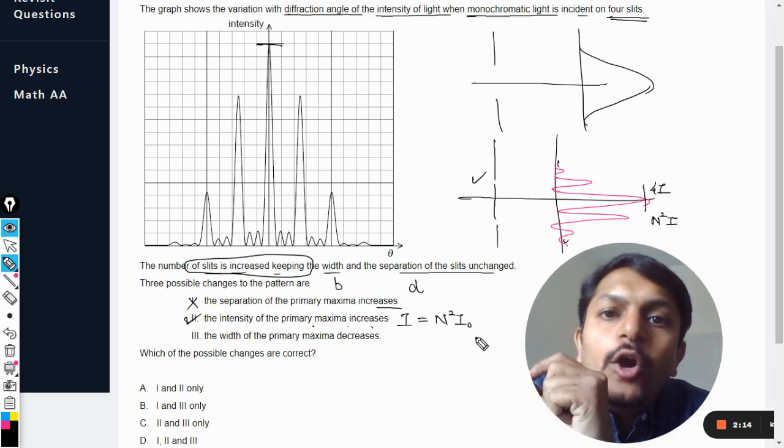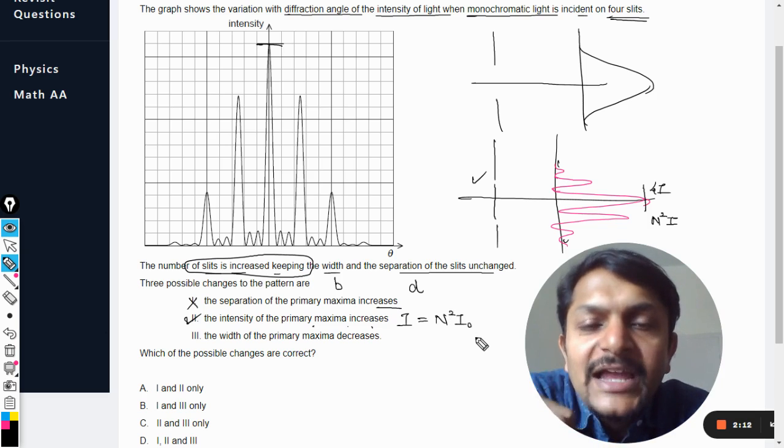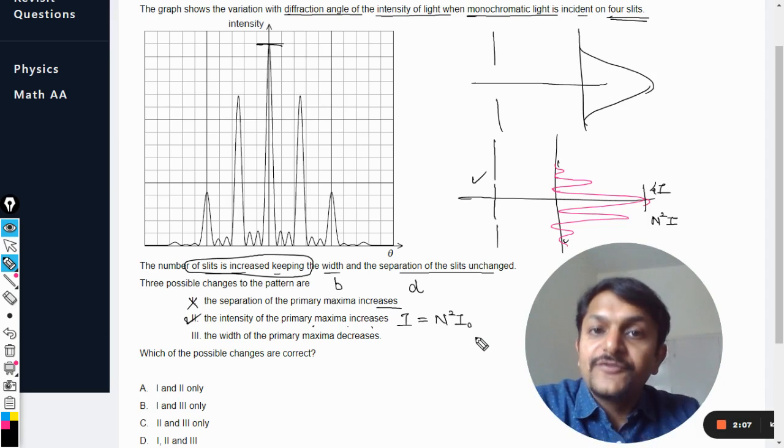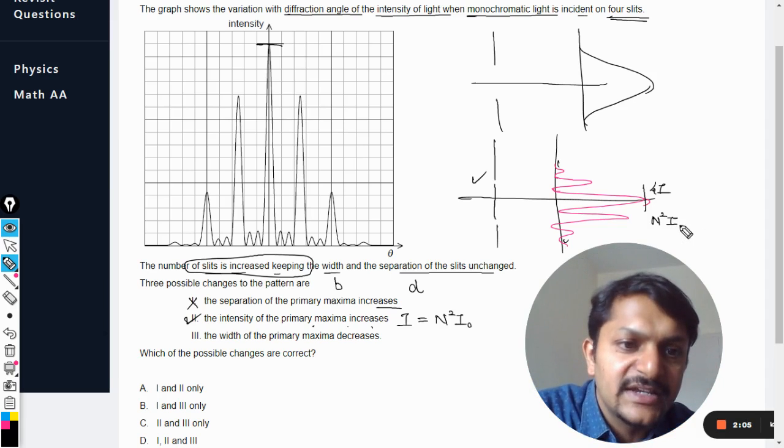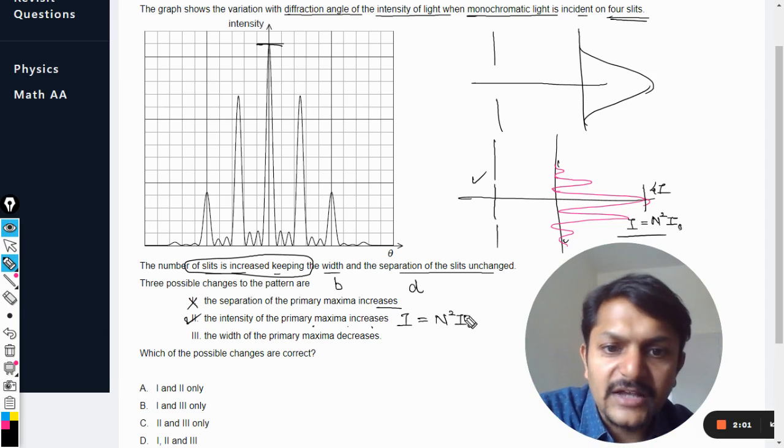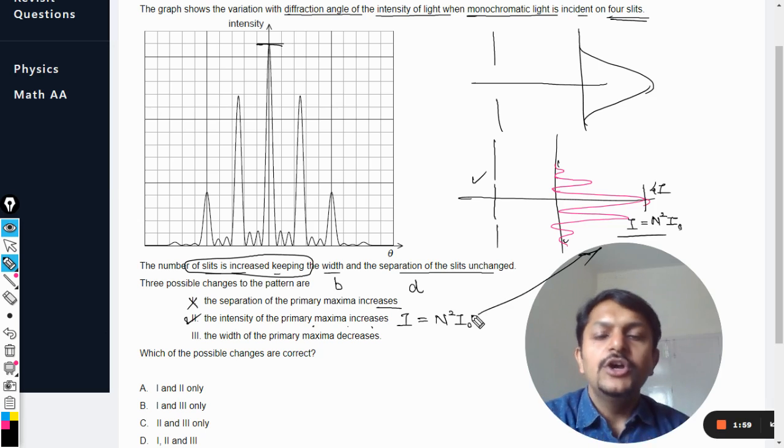I₀ or I zero is the original intensity of the light which is coming out of one single slit, and I is the total intensity after the interference has taken place, which is this. So this is I₀ or I zero and this is I.